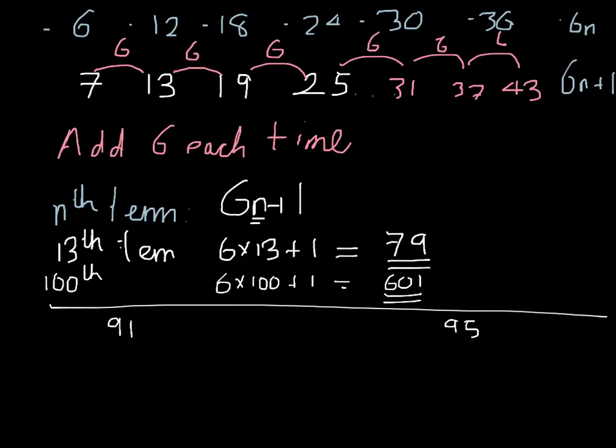Or we could say, well, if it was in the sequence, we know we would be able to find an n such that 6n plus 1 would be equal to 91. And we could subtract 1 off both sides so that 6n would therefore have to be equal to 90. And dividing by 6, n would have to be equal to 15.